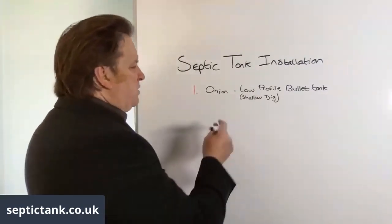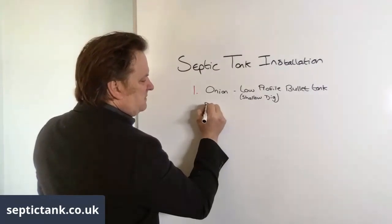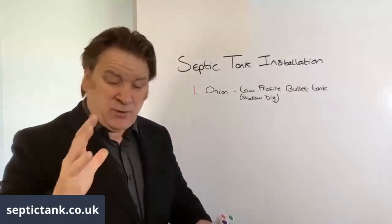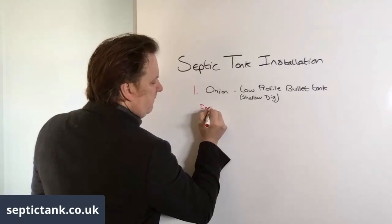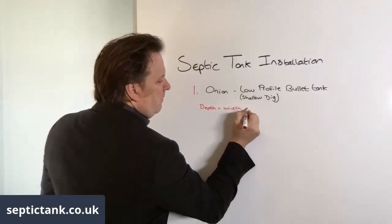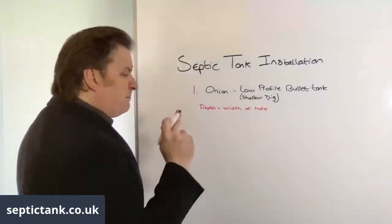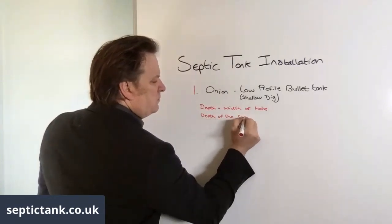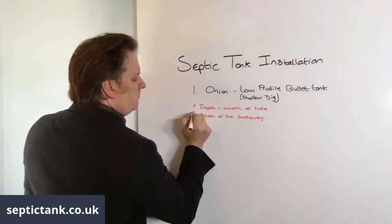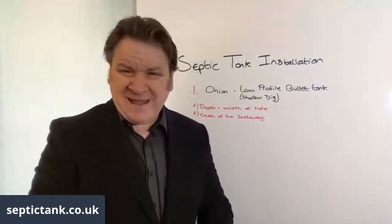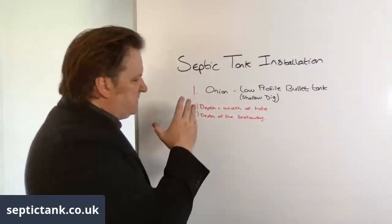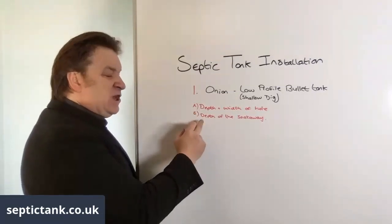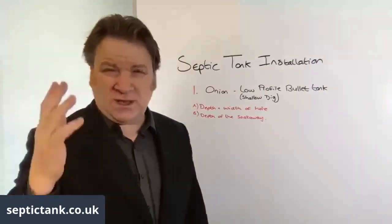When it comes to choosing between an onion and a low profile tank, it's about two things: the depth and width of the hole - that's number one. But number two, and this is even more important, it's going to be the depth of the soak away. Depending on what tank you go for will determine the depth and width of the hole, and that also determines and dictates the depth of the soak away.